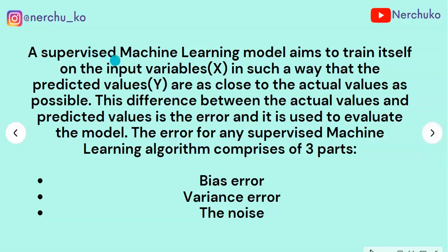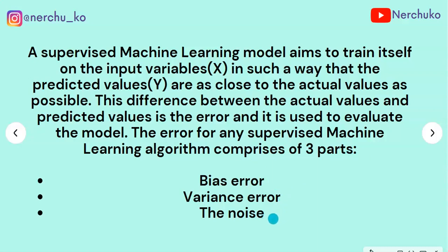A supervised machine learning model aims to train itself on the input variables x in such a way that the predicted values y are as close to the actual values as possible. This difference between the actual values and the predicted values is the error. The error for any supervised machine learning algorithm comprises three parts: bias error, variance error, and noise.